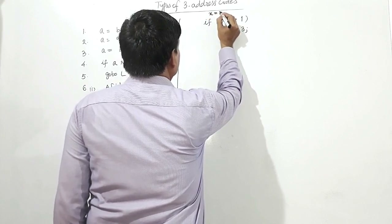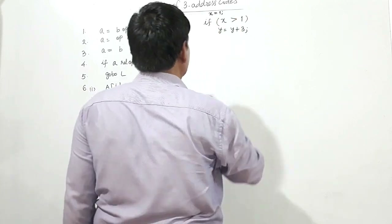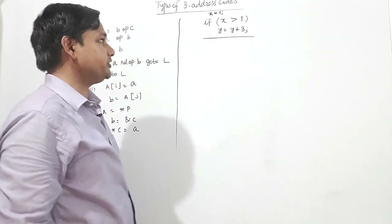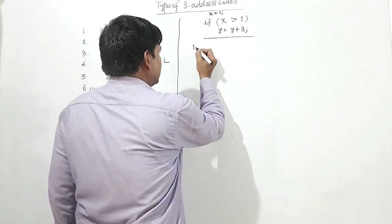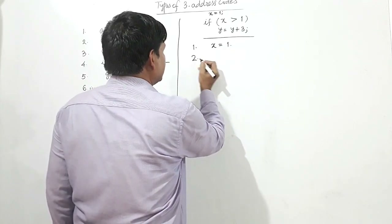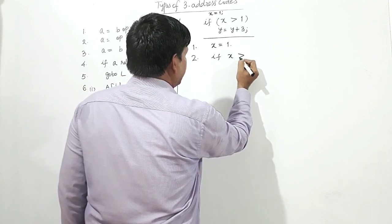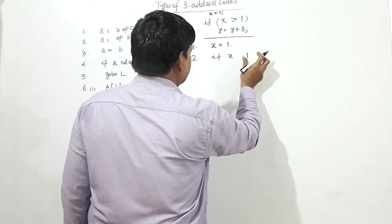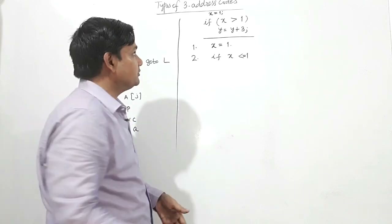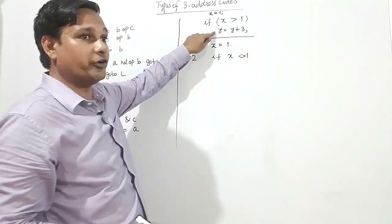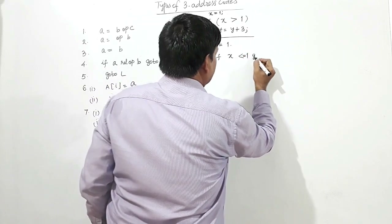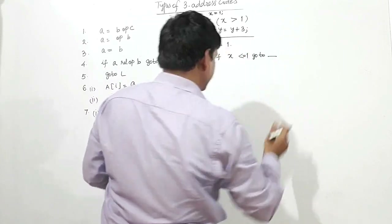X is equal to 1. I will write this code segment into three address code. I am giving line numbers. Line 1: I will assign X equal to 1. In the second line, if X is greater than 1 — if X is less than or equal to 1, what do I do? I have to terminate, because control will not go into the body of the if.